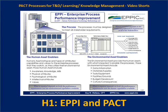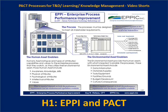From there, we can do an Ishikawa diagram — a cause and effect fishbone diagram — and we can break that down into human assets that are required and the environmental assets that are required. At the bottom of the chart, on the left are the human asset enablers. Humans bring awareness, knowledge, and skills to the process. They also bring their physical attributes, psychological attributes, and intellectual attributes — or lack thereof — and they bring their personal values to the process.